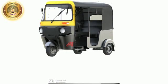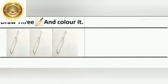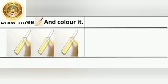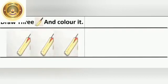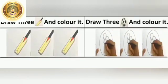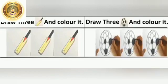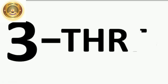Now, it's time for some activity. Draw three bags and color them. Now, let's see how to write number three. Draw half a curve and draw one more curve — that's the way we make a three. Students, repeat after me: Three. T-H-R-E-E. Three.